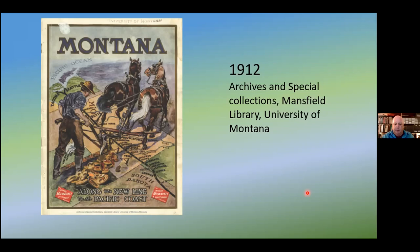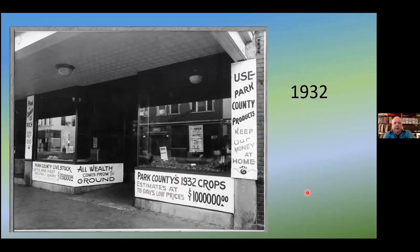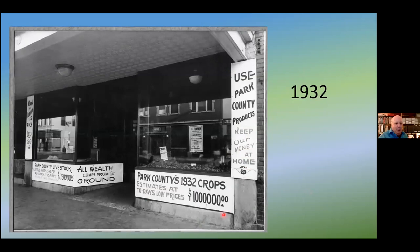That also led people to hate the railroads, blaming them for getting them to come out. But in Park County in 1932 they were still pushing their agriculture. I like this: 'Keep your money at home — don't go to Bozeman, buy it here in Livingston.' They're showing crops worth a million dollars in agriculture, $175,000 worth of sheep and cattle and so forth. Agriculture has played a big part in the development of the valley.